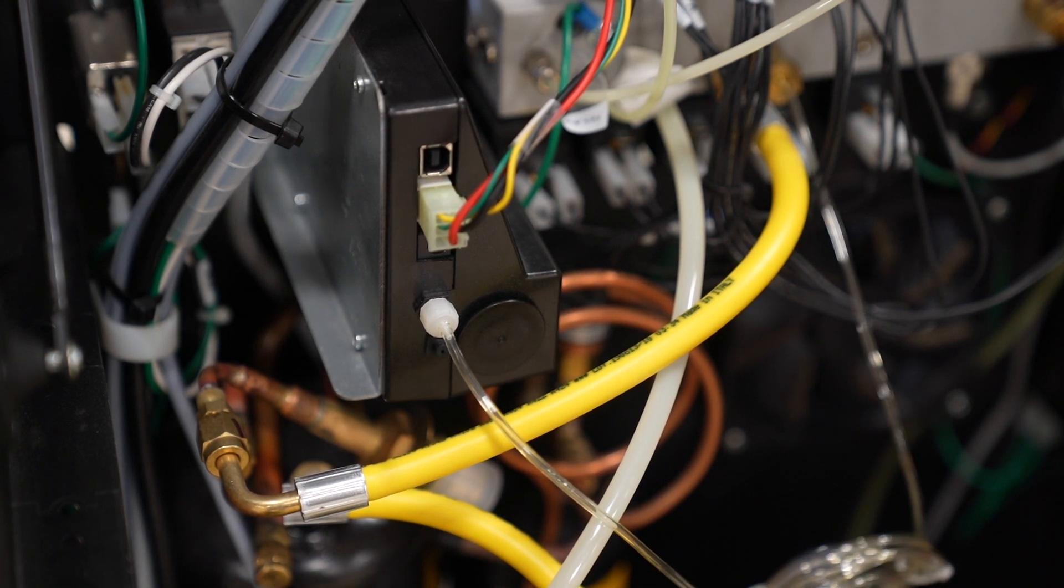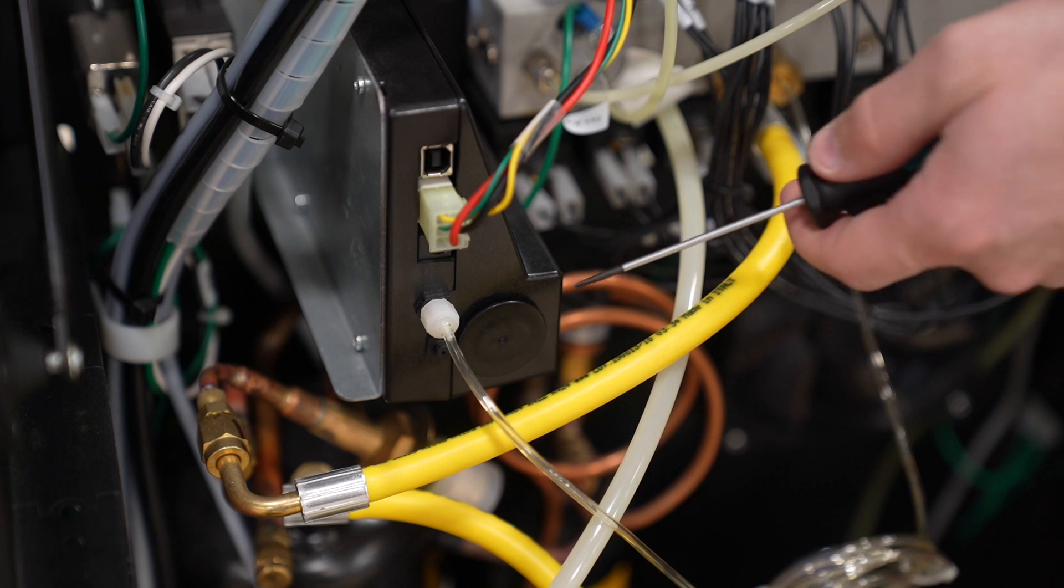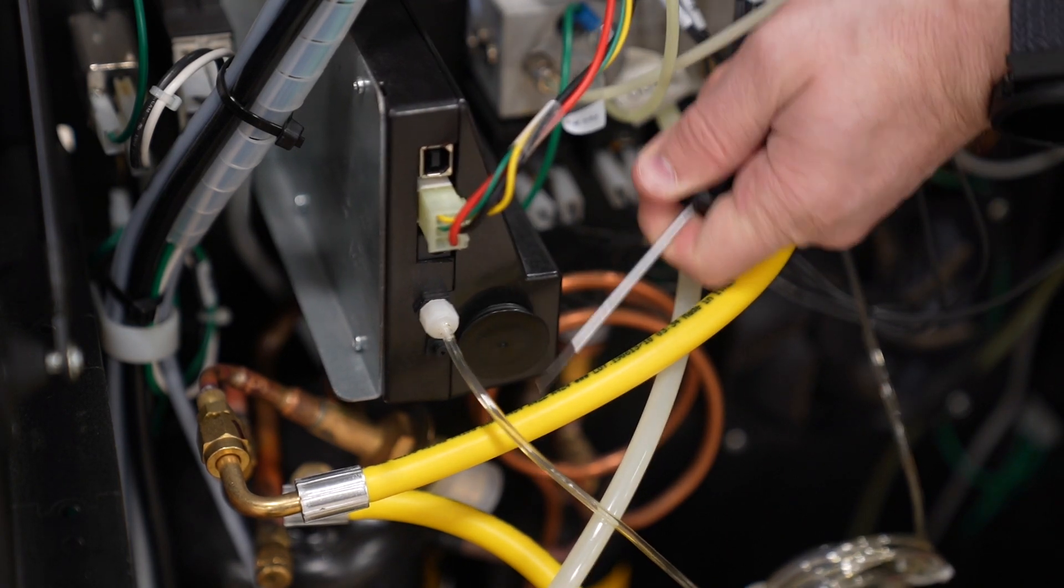First, we're going to look at the Neutronix identifier. You can tell it's Neutronix by the black cap located on the front face. Take your flathead screwdriver and pry the black cap until it's released.